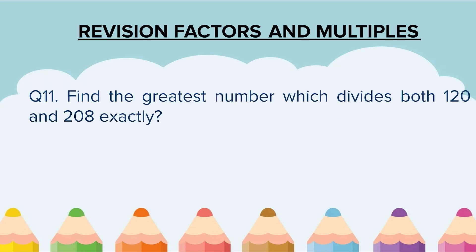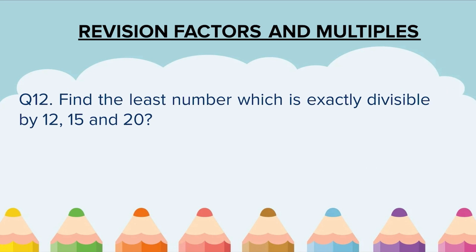F. Every number is a multiple of dash. Question 11. Find the greatest number which divides both 120 and 208 exactly. Hint: here you have to find the HCF. Question 12. Find the least number which is exactly divisible by 12, 15 and 20. Hint: here you have to find the LCM.